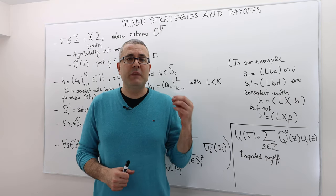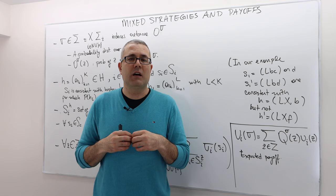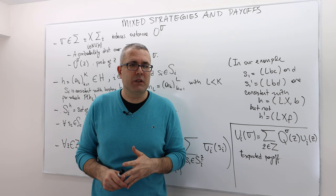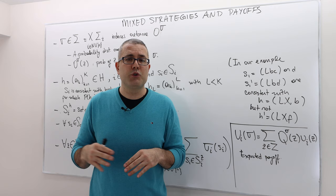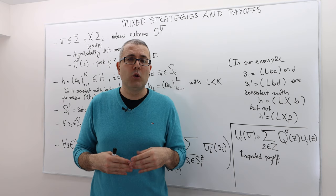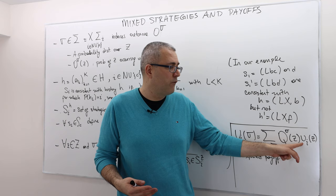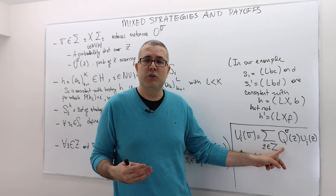How are mixed strategy profiles and players' payoffs related? Given that I select one strategy profile, how can I calculate each player's expected payoff? The idea is simple: by using the strategy profile, you calculate the probability distribution over outcomes — meaning the probability distribution over the set of all terminal histories. Once you determine this probability distribution, you multiply the von Neumann-Morgenstern utility of each terminal history times the likelihood of that history, and then add them up. This is how we calculate the expected payoff.